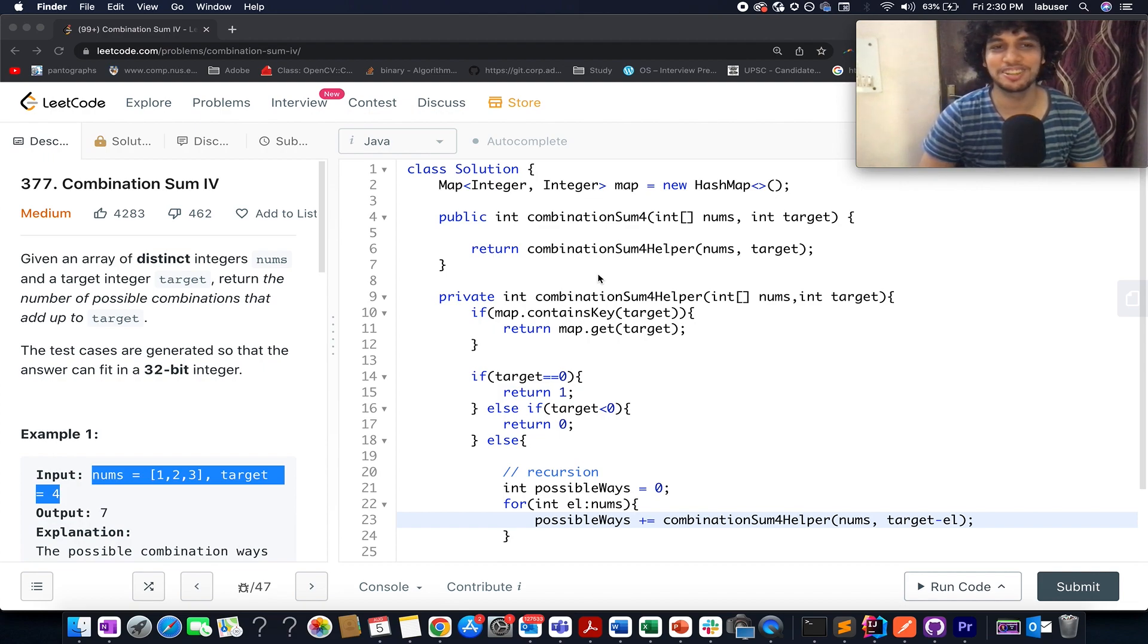The problem that we have today is combination sum 4. This problem is based on the concept of recursion plus memoization and I know most of the subscribers of CodingDecoded would be able to solve this problem by themselves. This is the power of consistency guys. This is the 850th video of CodingDecoded and I am super proud of the success that we have made.